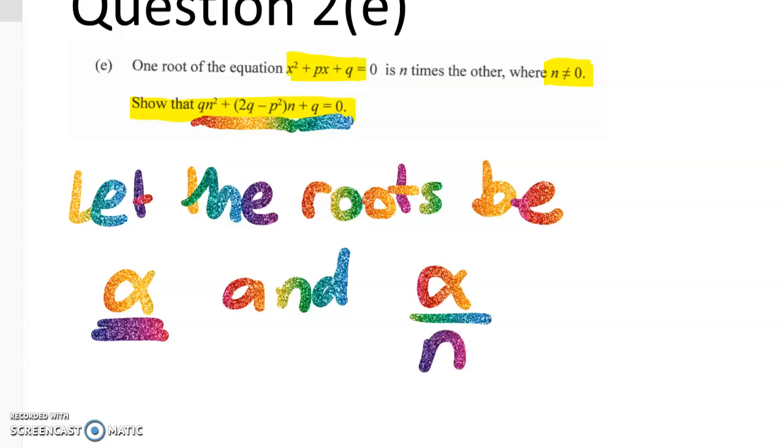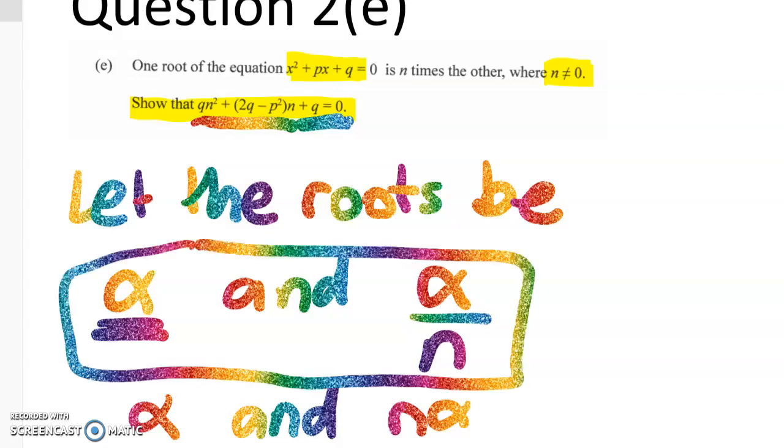Now it's completely fine, instead of doing it that way, to make them alpha and n alpha. And you can do that, and you'll get to the same place as me. This is just how I happened to start this one off.